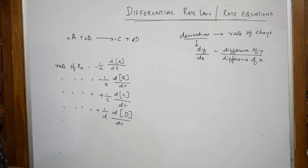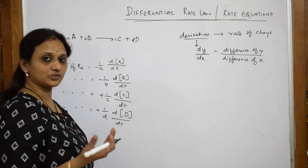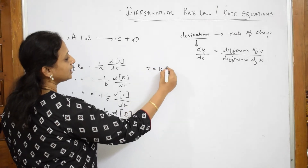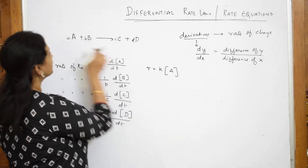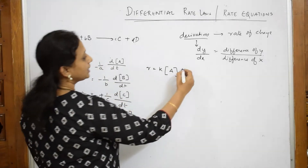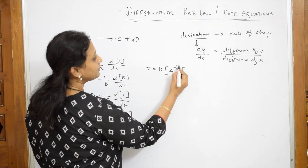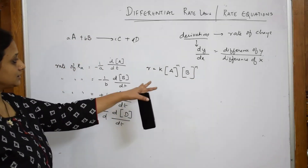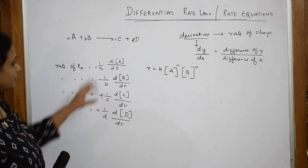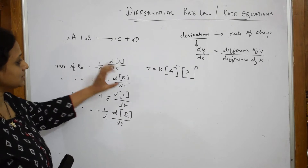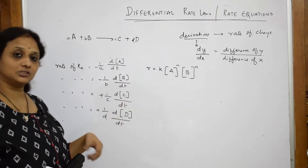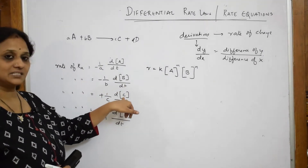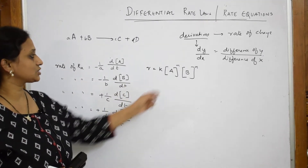Now, the same reaction, if I have to write in terms of rate constant also, then how will I write this? I can write this as rate is equal to K into A raised to power of m, B raised to power of n. For the reactants term I am going to write like this. For the products also, you will be writing like that — C raised to power of m and D raised to power of n.